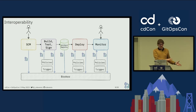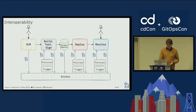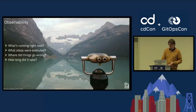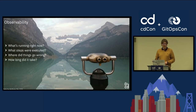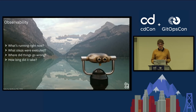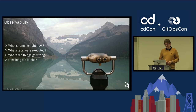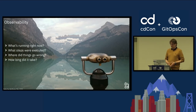This is basically switching from integration to interoperability. But there are still some issues with this kind of setup. What about observability? When you have this event-driven approach with different components declaring what they're doing in a distributed format, it becomes harder to answer questions like: what is running right now, where am I in my workflow, what steps were executed, and if something goes wrong, where did it go wrong? It becomes harder to answer questions like how long did it take.